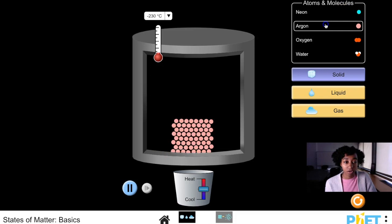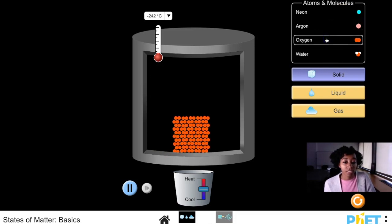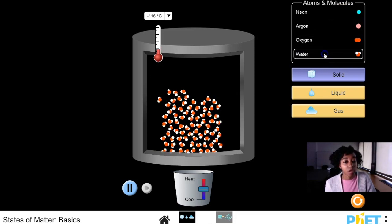We have neon and argon, which are noble gases, oxygen, which is a diatomic atom, and water, which is a molecule.